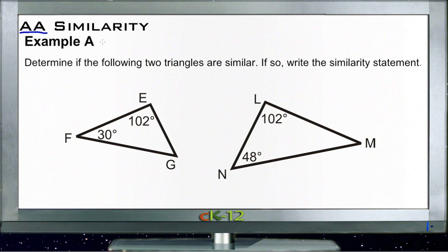Our first example asks us to determine if the following two triangles are similar and if so, to write the similarity statement. We need to see if there are two angles that match on the two triangles. We know that angle E measures the same as angle L, so if E and L are congruent then we just need to find one more angle.